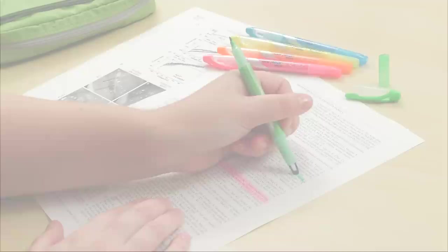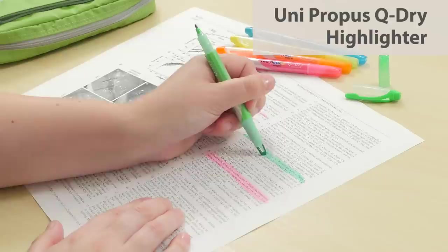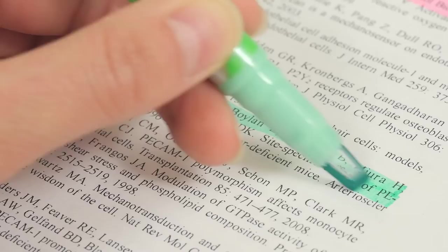Even lefties need to highlight their notes. While most highlighters are wet, the Uni Propus Q dry double-sided highlighter dries within four seconds. The wide tip has a window that lets you see exactly what you're highlighting. The pen also comes with a smaller tip size for more detailed highlighting.